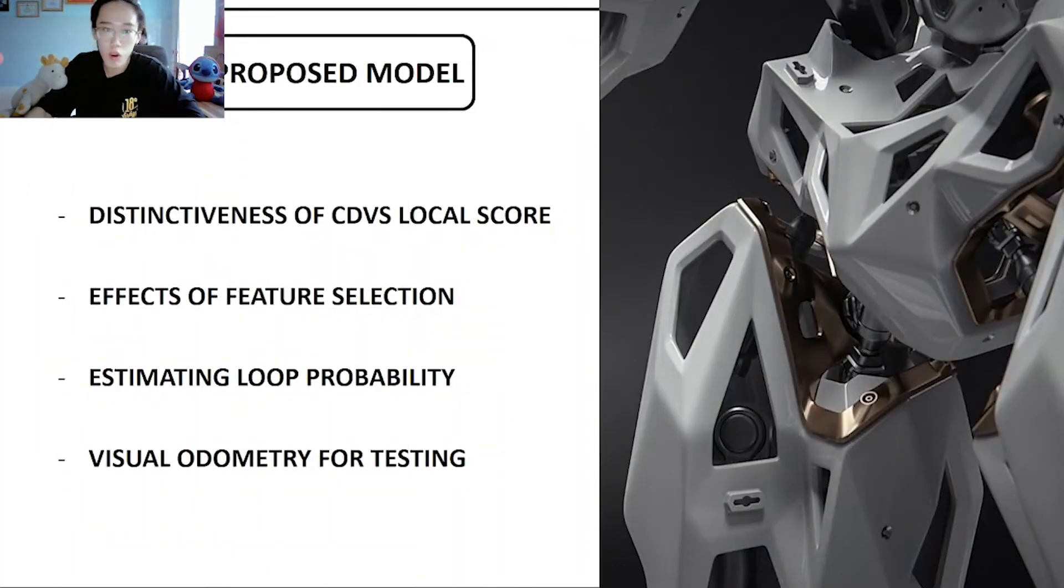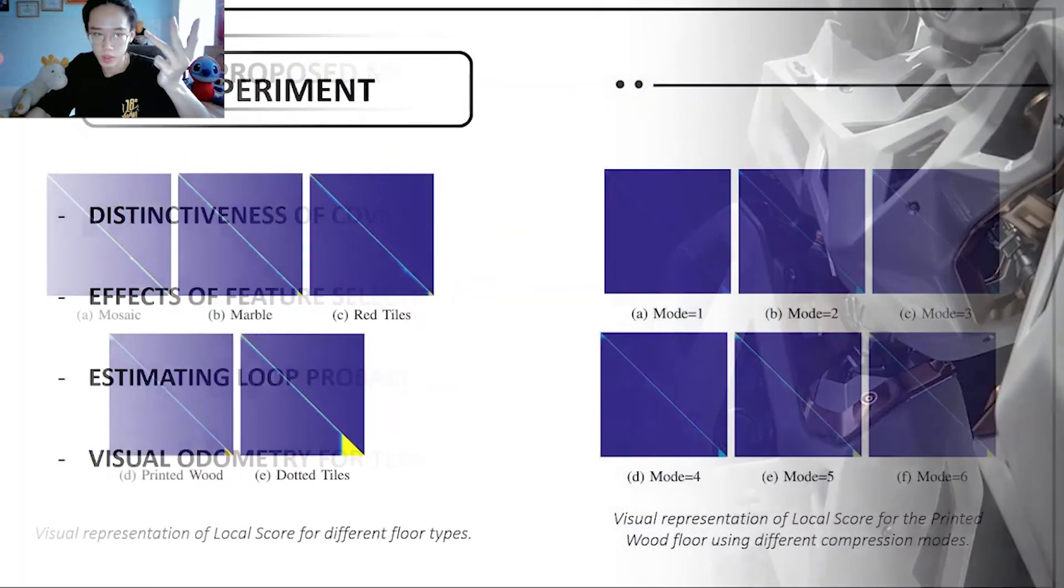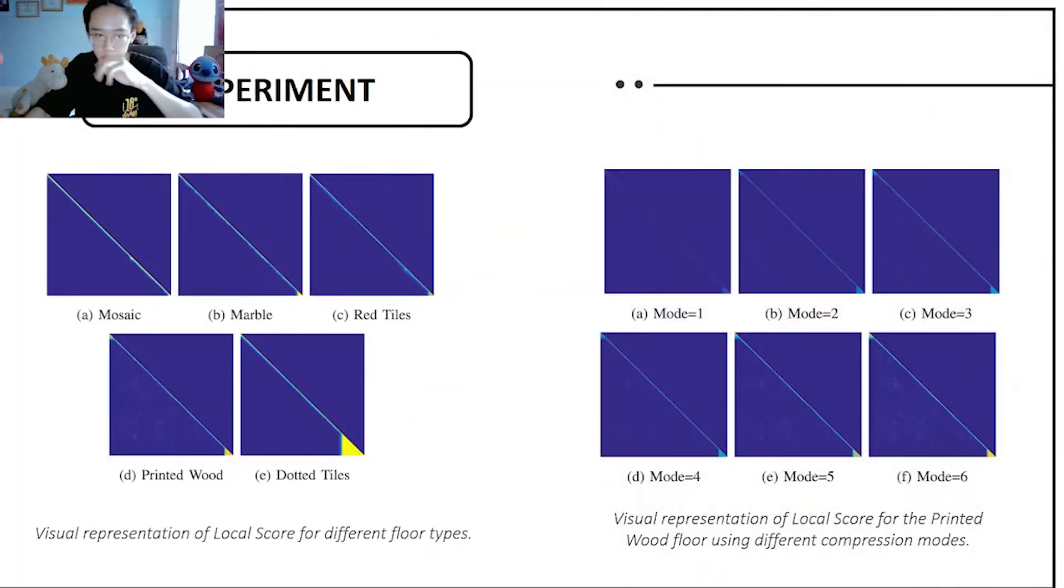In the training of global model we have four experiments: the technique of CDBS local score, effect of feature selection, estimating loop probability, and visual automation for testing. In our experiment we have different types of flooring in the test pictures.